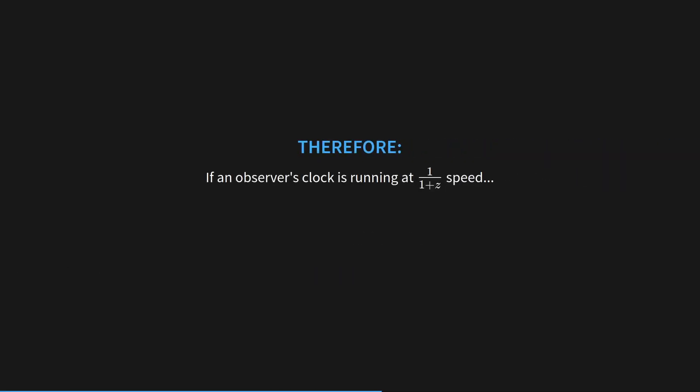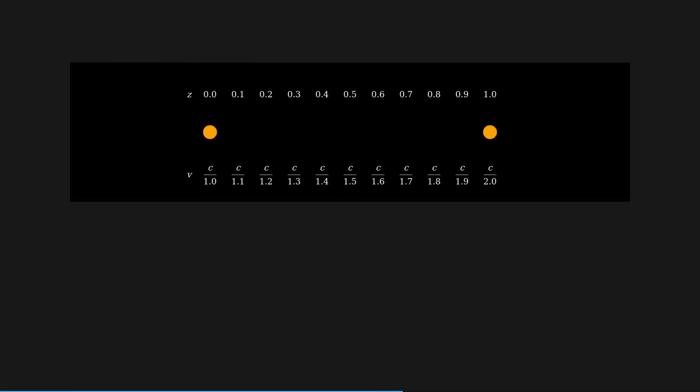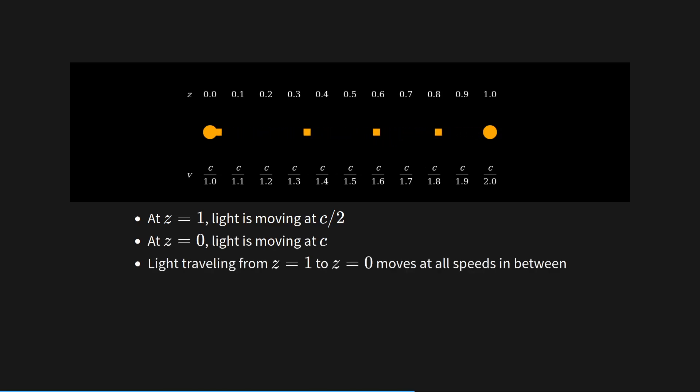Therefore, if an observer's clock is running at 1 over 1 plus Z, then to be measured at C on that clock, light has to be moving at C over 1 plus Z there. So light will start moving at C over 2 from Z equals 1, and will reach us at Z equals 0 at C. That means the light is traveling from all the speeds in between from Z equals 1 to Z equals 0.